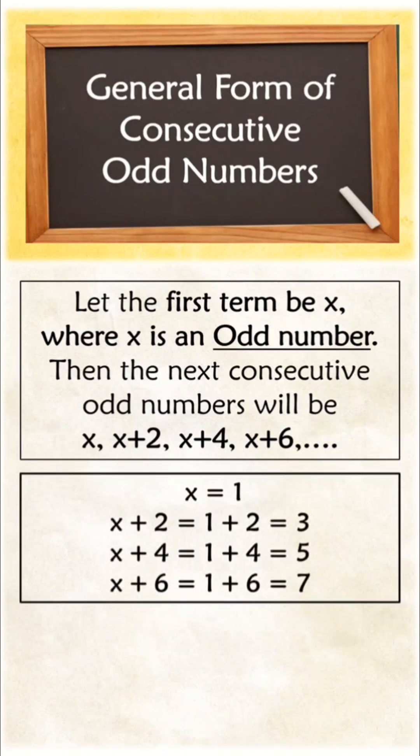If x=1, the next term will be x+2, which is 1+2=3. Next term 1+4=5, then 1+6=7, 1+8=9. So you can find the next numbers by using this general form.